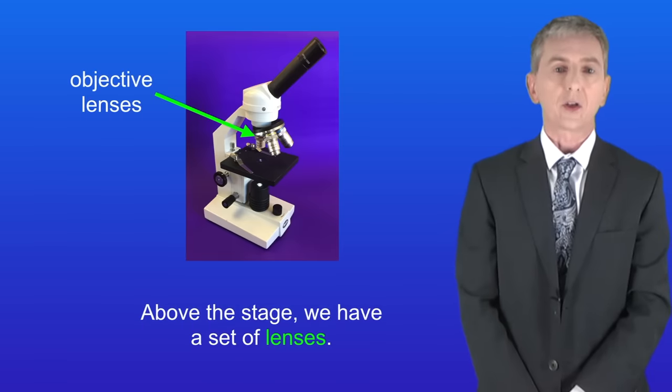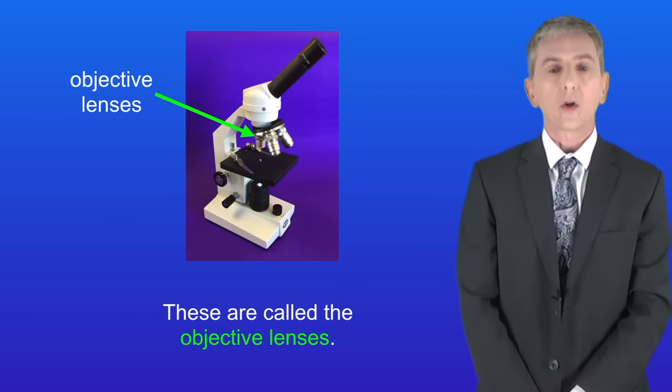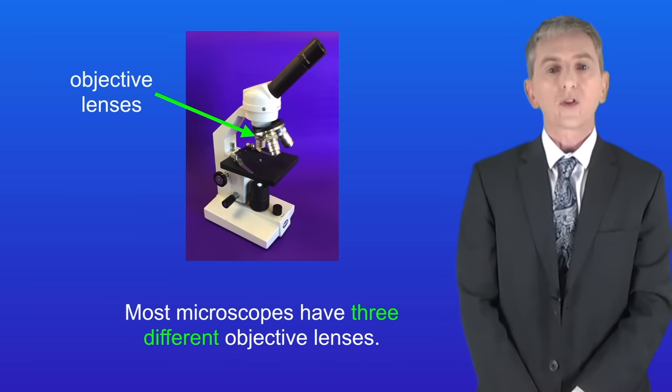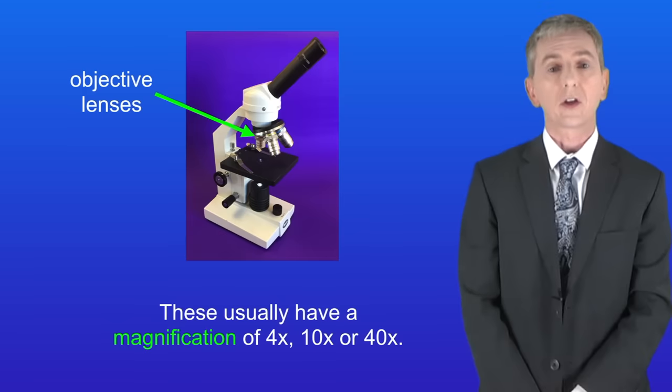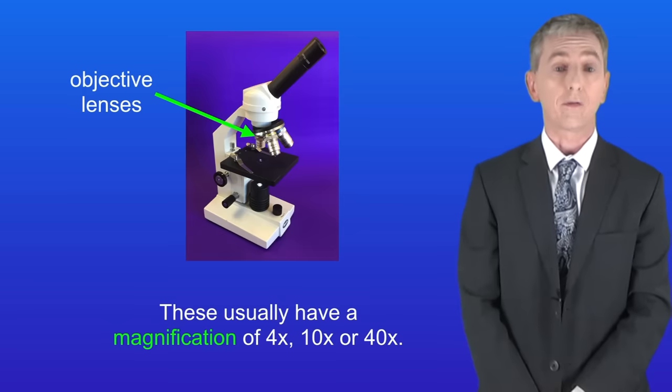Above the stage we've got a set of lenses. These are called the objective lenses. Most microscopes have got three different objective lenses. These usually have a magnification of four times, ten times, or forty times.